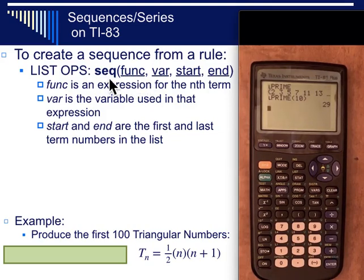You type the sequence command first which is in the list ops menu and then you type the function, the formula that you're going to be using. You'll have to tell the calculator which symbol in that formula is the variable and you'll have to tell it when you want to start and how many terms you want to go to. So start is usually one and end is maybe ten if you want the first ten numbers or one hundred in this example here.